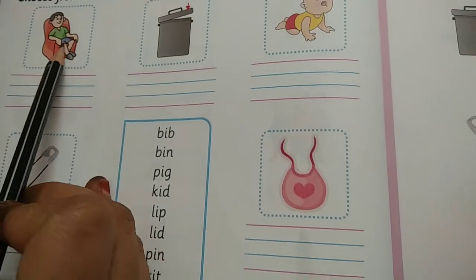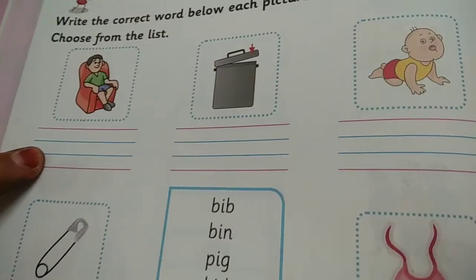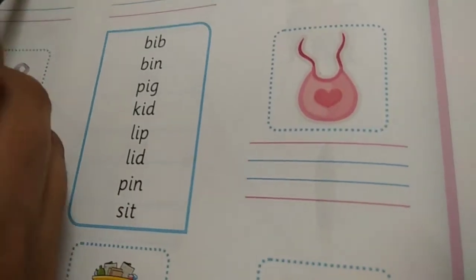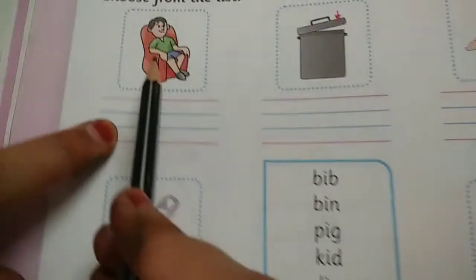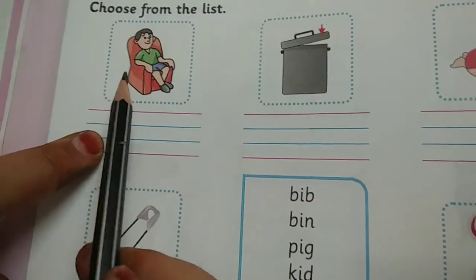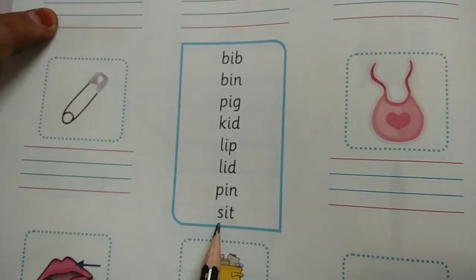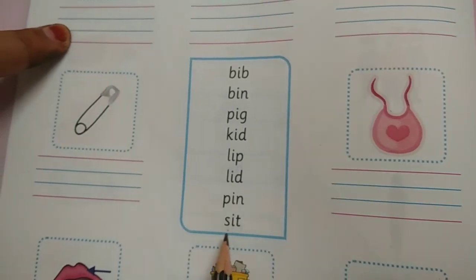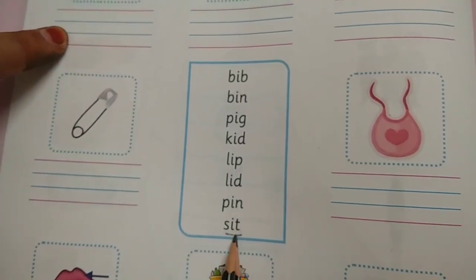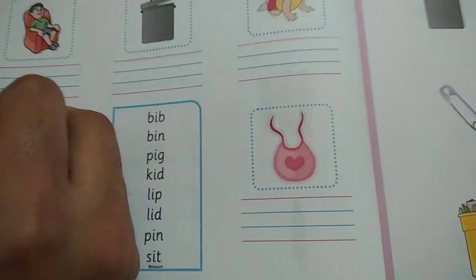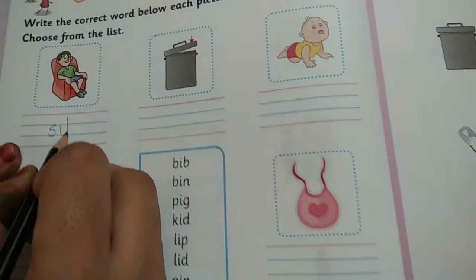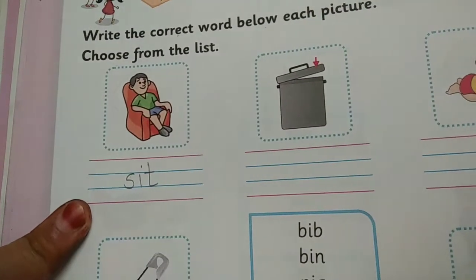This picture is given here. We see this picture. Where will we get the words from? Here is the list. These are the list of the words. Now what is this boy doing? He is sitting. So what will be here? Sit. S-I-T. So where is it here? S-I-T. Yes. Here. S-I-T. You can underline it. So you will write it down. S-I-T. Sit.